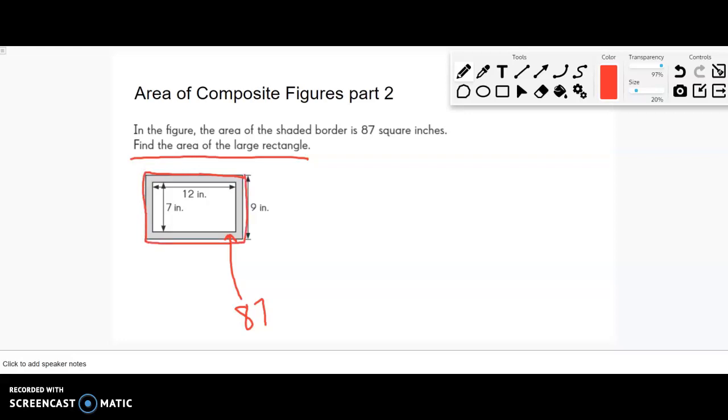Find the area of the large rectangle. How am I supposed to do that? Well, the large rectangle is made of the smaller rectangle plus the border. I know the border is 87, so now I just have to figure out what that small rectangle is. Thankfully, I have the length and width: 12 and 7. I know how to find the area of a rectangle - multiply length times width. 12 times 7 is 84.